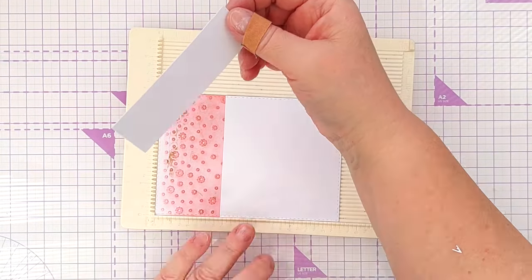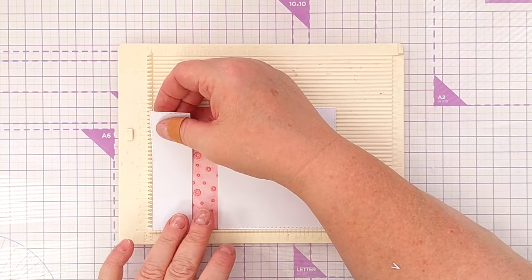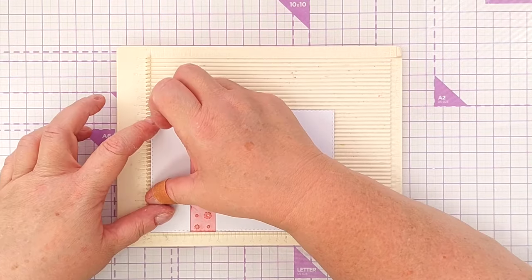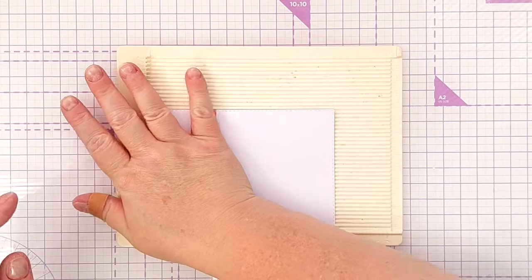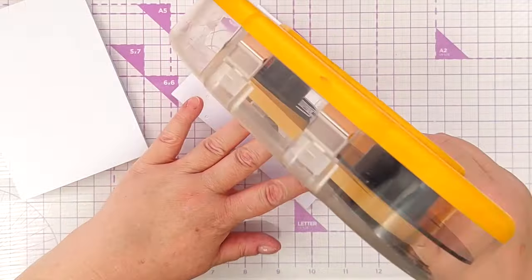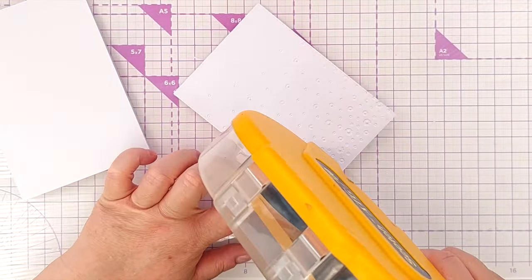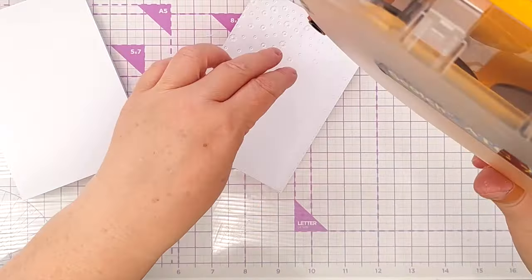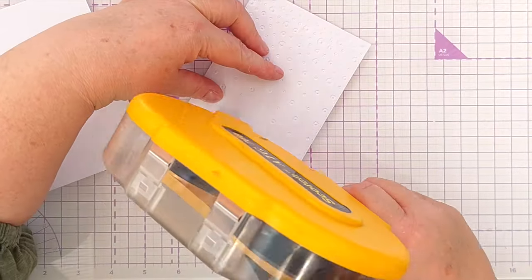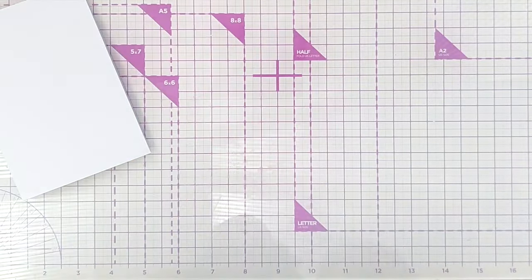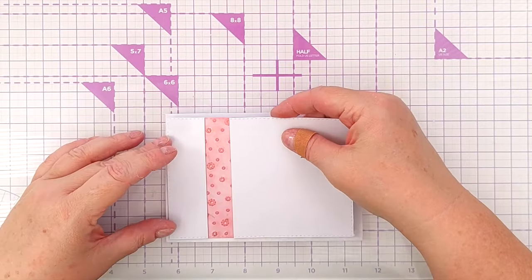I started with the big bit, the bottom portion, and then I flipped everything round and did the top part, the smaller portion. It doesn't matter which way you do it. Before sticking my letters and sentiment to the front of my card, I'm adding my panel to my card blank with some tape runner. You don't have to use tape runner, you can use anything for this.